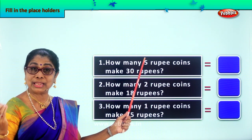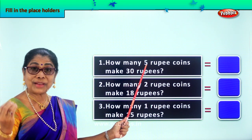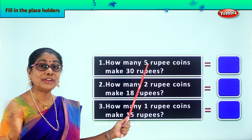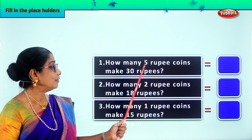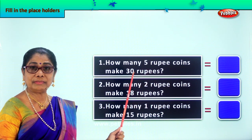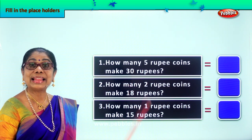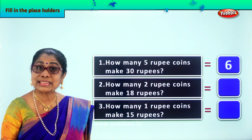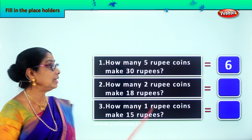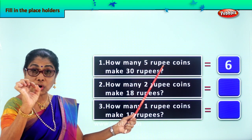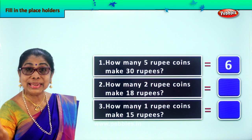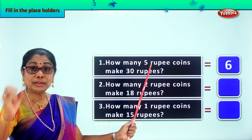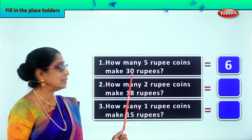So you use the 5 times table up to 30. 5 ones are 5, 5 twos are 10, 5 threes are 15, 5 fours are 20, 5 fives are 25, 5 sixes are 30. So there are how many 5-rupee coins in 30 rupees? Having done the table, we know it is 6. We have 6 five-rupee coins in 30 rupees.